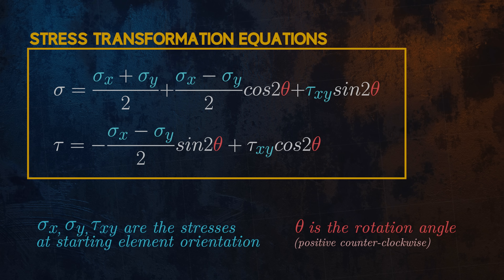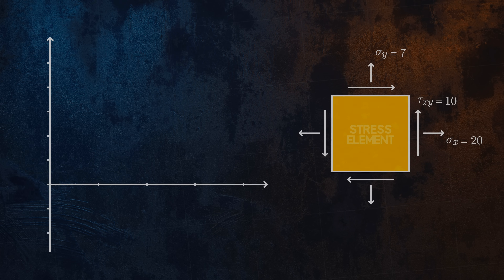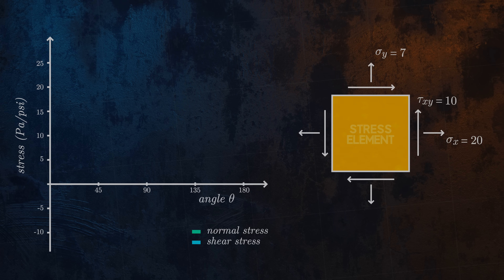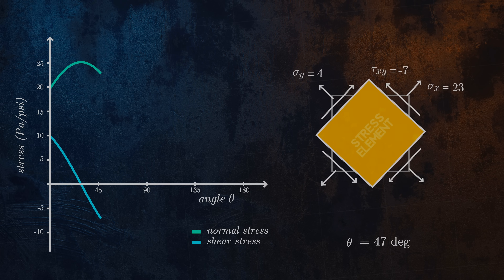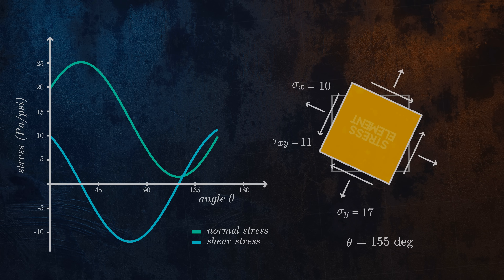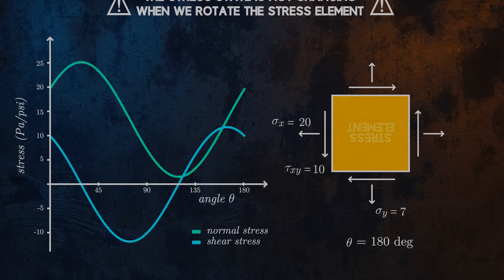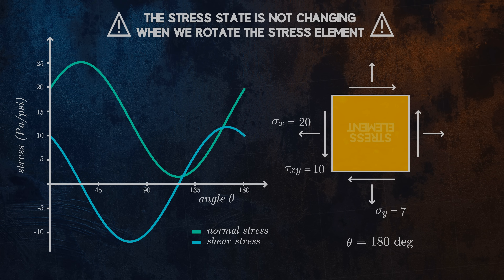Let's look at an example of stress transformation for the stress state described by the stress element shown here. As we rotate the stress element, the normal and shear stress components will vary. Once we have rotated the stress element by 180 degrees, we will return to the configuration we started with. It is important to remember that the actual stress state within the large body is not changing when we rotate our stress element — we are just rotating the axis of the coordinate system we are using to visualize the stresses at a single location.